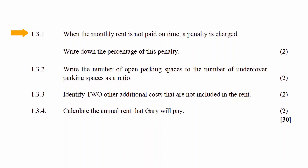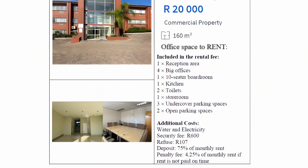In question 1.3.1, it is stated that when the monthly rent is not paid on time, a penalty fee is charged. You have to write down the percentage of this penalty. In the advertisement, the penalty fee as a percentage is listed as 4.25%.